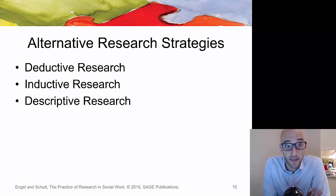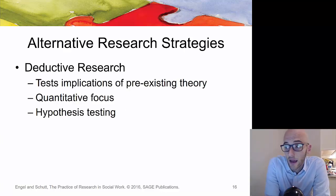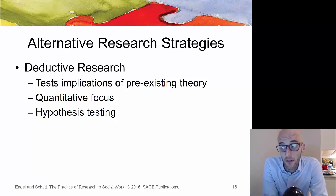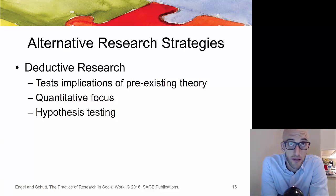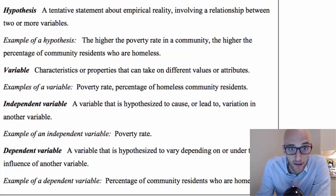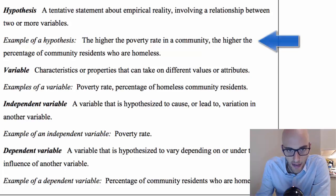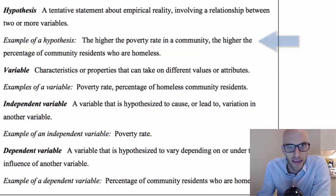There are three alternative research strategies: deductive, inductive, and descriptive. Deductive research begins with a theory and tests implications with data — frequently used with quantitative methods. You start with a pre-existing theory, collect data, and see whether the data conforms to prove that theory. You begin with a hypothesis — a tentative statement about empirical reality, usually looking at relationships between multiple variables. For example: the higher the poverty rate in a community, the higher the percentage of residents who are homeless — a fairly easily testable hypothesis.